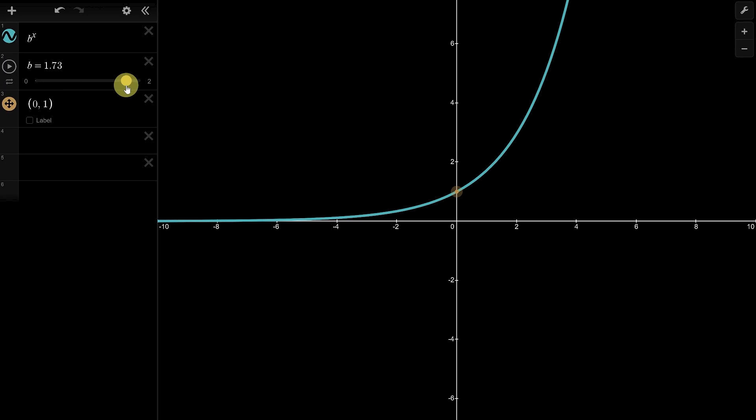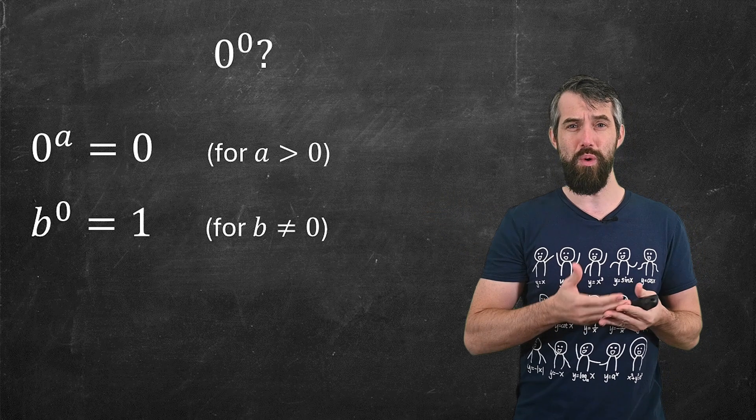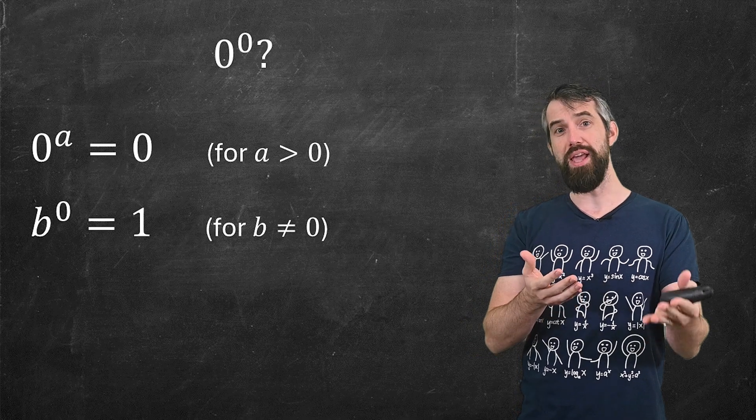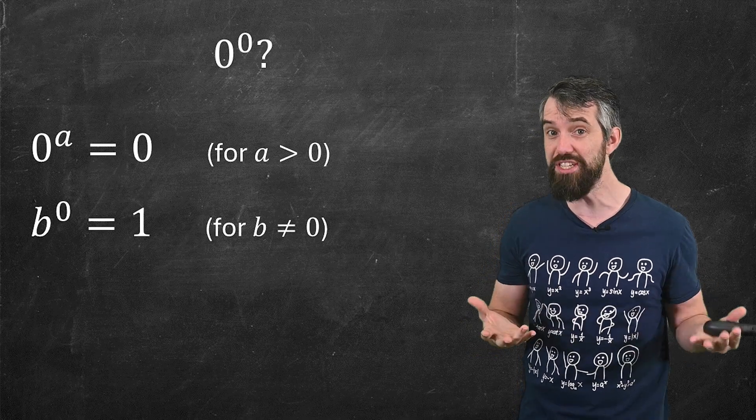Here I've graphed b to the x. This is either exponential growth if b is greater than one, or exponential decay if b is less than one. But either way, when I zoom in on x equal to zero, I get a height of one. So I've got one argument for why it should be zero, another argument for why it should be one. Which is it?